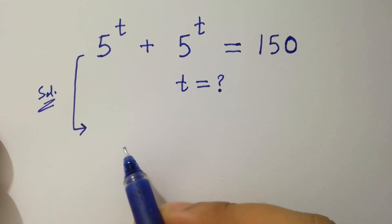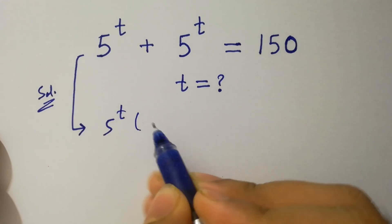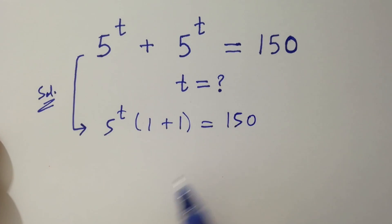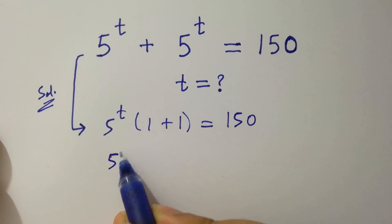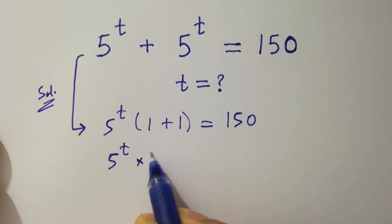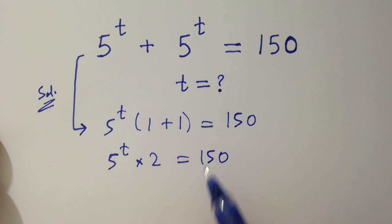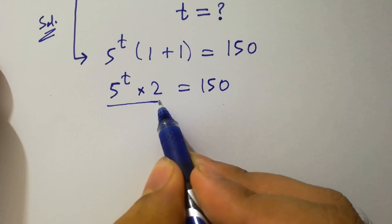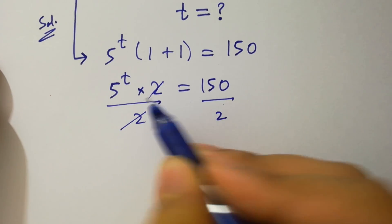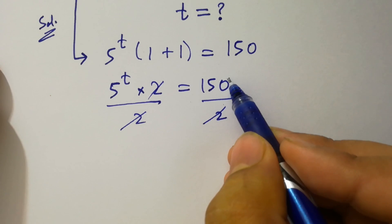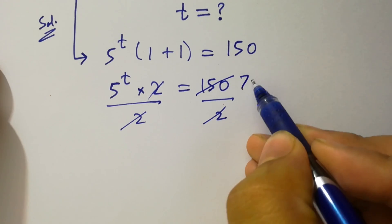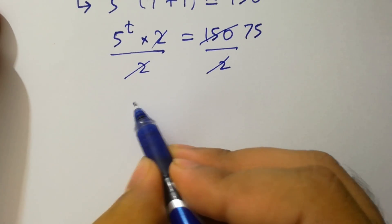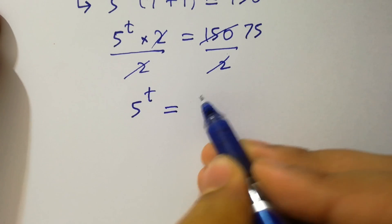5 to the power t can be common. We have here 1 plus 1 equal to 150 as it is, and 1 plus 1 is 2, equal to 150. To find t, divide by 2 on both sides. 2 and 2 cancel. We have here 2 times 75 is 150, so 5 to the power t equals 75.